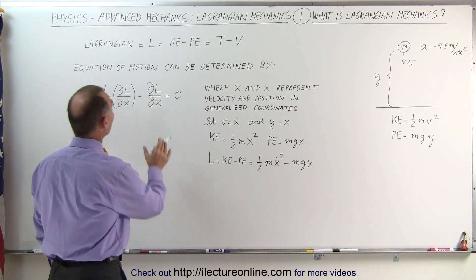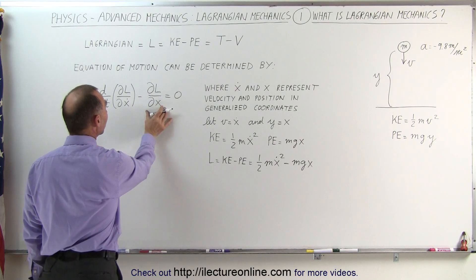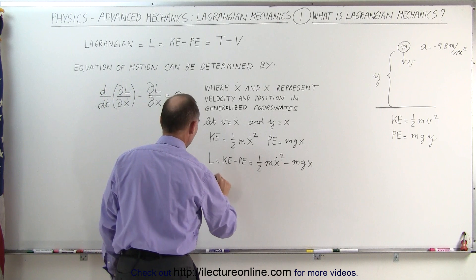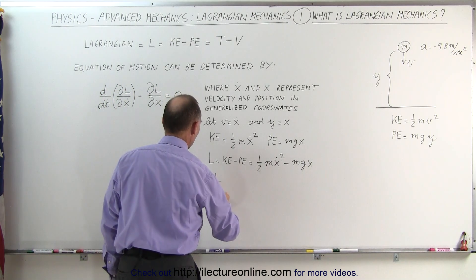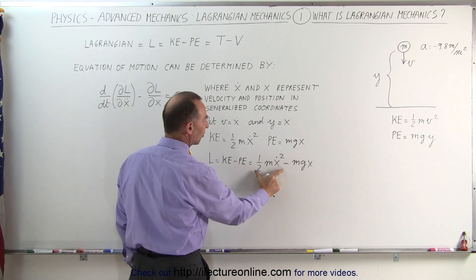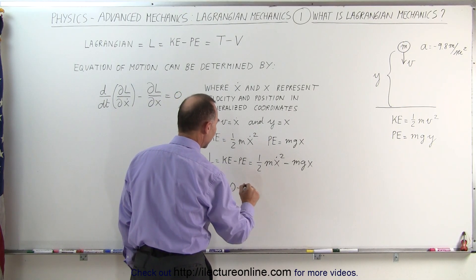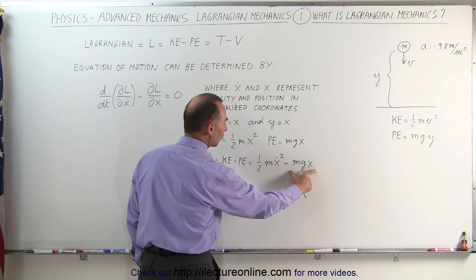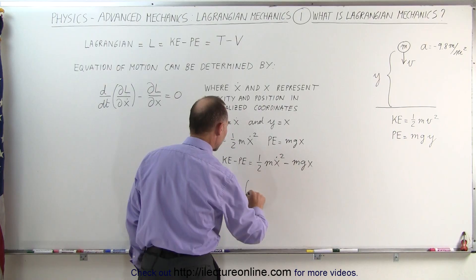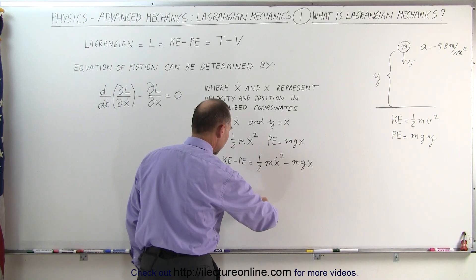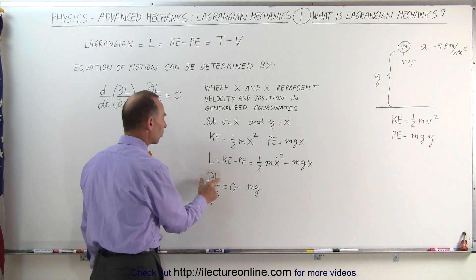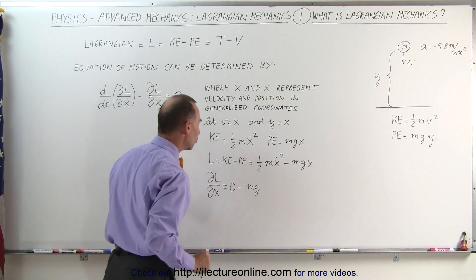We're now going to take the partial derivative of L with respect to x, and the partial derivative with respect to x-dot. First, the partial derivative of the Lagrangian with respect to x: since there's no x in the kinetic energy term, that goes to zero. Then we take the derivative of mgx with respect to x — x is the variable, m and g are constants — giving us minus mg. So the partial of L with respect to x is simply minus mg.